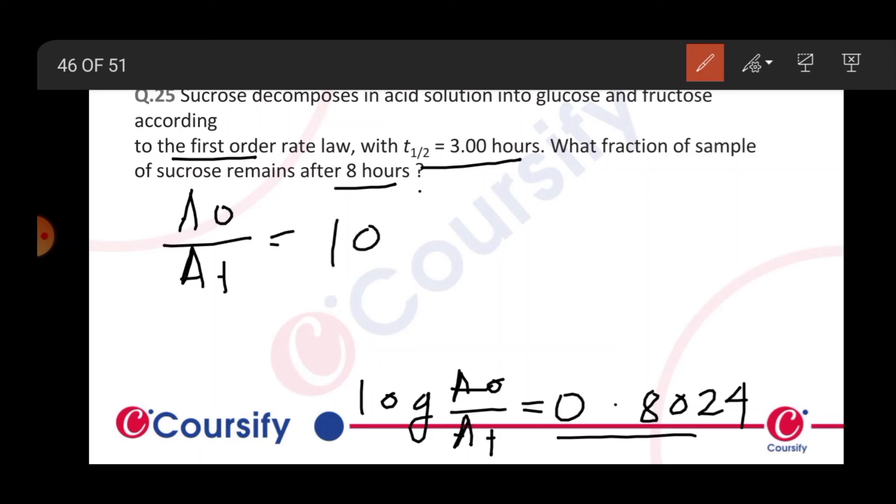A0 by AT equals 10 to the power 0.8024, so AT by A0 equals 10 to the power minus 0.8024.